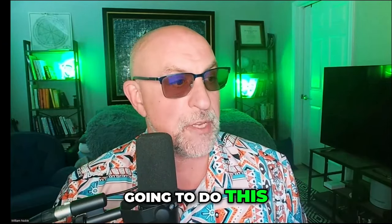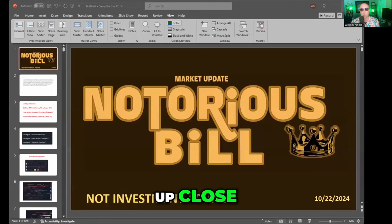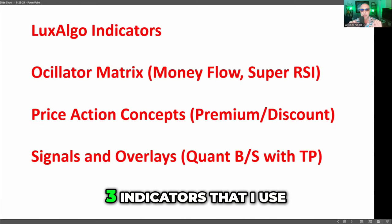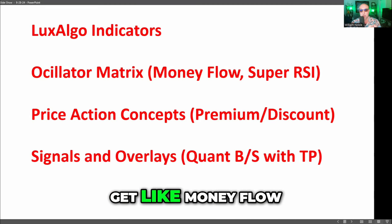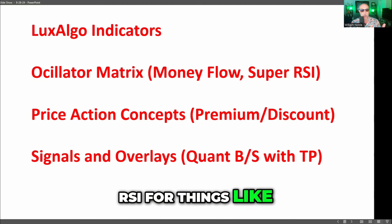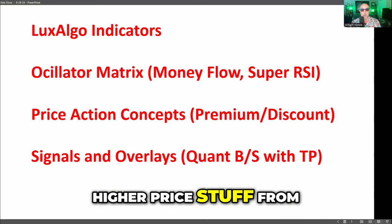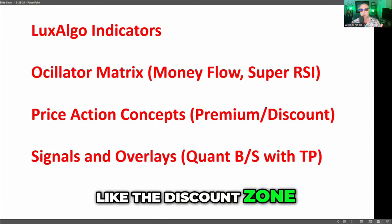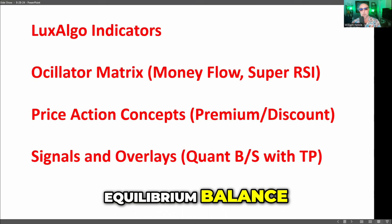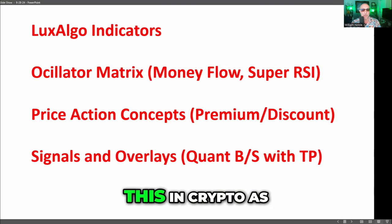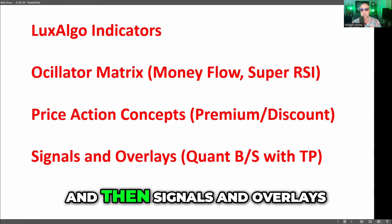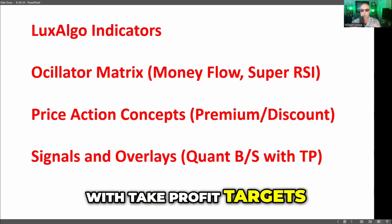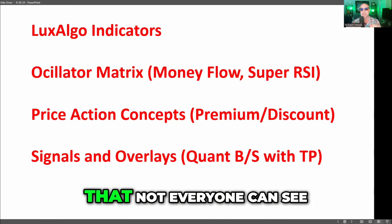We're going to dive into PowerPoint so I can show the menus up close — a lot of people use dropdowns on instructional videos and you can't see them. This is not investment advice. The three indicators I use are: oscillator matrix, which is where we get money flow and a super RSI for reversals and divergences — very much like higher-price stuff from people like Tom DeMark. Price action concepts, where we get a range divided into discount zone, equilibrium, and premium. And signals and overlays, a quant momentum-following signal for buying and selling with take-profit targets, which I really call support and resistance levels that not everyone can see.